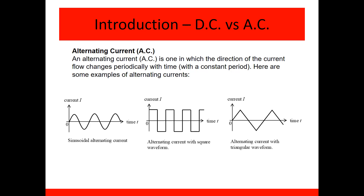AC is essentially the opposite of DC — anything that changes direction is AC. In our subject we generally focus on those with a repeating waveform. A repeating waveform is sinusoidal in nature — we call it a sinusoidal waveform. We also have square waveforms and triangular waveforms. The sinusoidal appears about 80% of the time, the square wave about 20%. The key point is it changes direction periodically — there's a constant period.